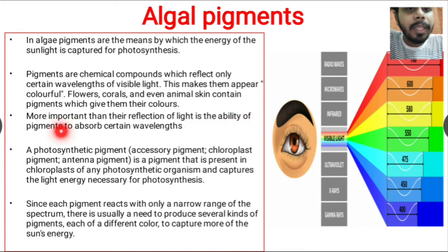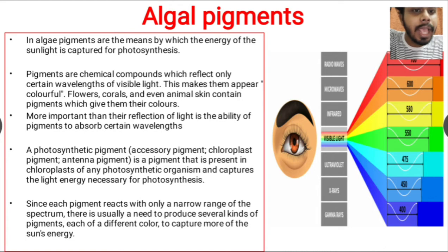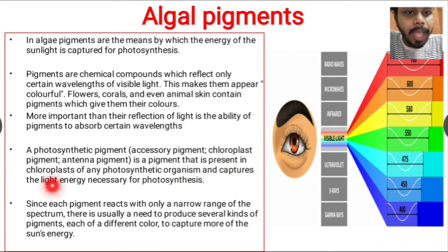More important than their reflection of light is the ability of pigments to absorb certain wavelengths. The reflection depends on their absorption of light. A photosynthetic pigment is a pigment present in the chloroplast of any photosynthetic organism that captures the light energy necessary for photosynthesis.